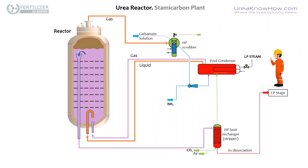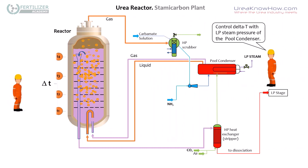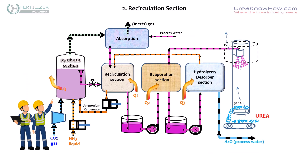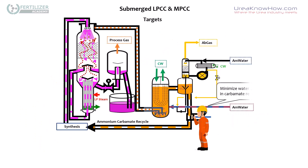Here we see the Stami Carbon urea reactor integrated in the pool condenser synthesis plant. Here you see the recirculation section and absorption section. We want to condense the carbamate gases and at the same time minimize the water content.